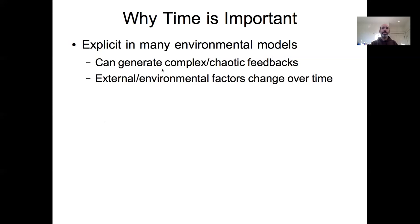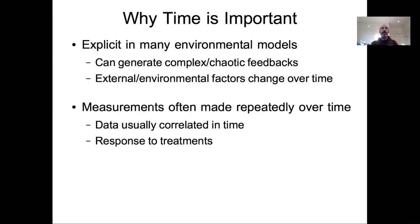Even in their simplest forms, dynamic models can generate complex and chaotic feedbacks. It's not just a shift from looking at a relationship between X and Y to looking at X over time or Y over time. It's often the case that we're still interested in the relationship between X and Y, but they're both changing over time, and the nature of that data has to be dealt with differently than if those X's and Y's were sampled independently.